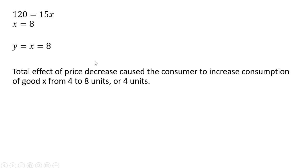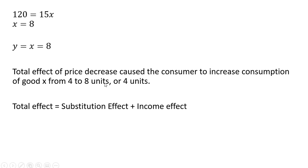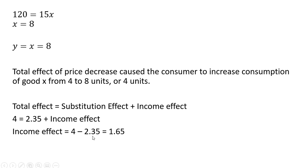The total effect of the price decrease caused the consumer to increase consumption of good X from 4 to 8 units — a 4 unit increase. Since the total effect equals the substitution effect plus the income effect, and we know the total effect is 4 and the substitution effect is 2.35, we subtract 2.35 from both sides: the income effect is 1.65 units. So when the price of good X fell, the substitution effect caused 2.35 more units to be purchased, and the income effect caused 1.65 more units — totaling 4 more units of good X.